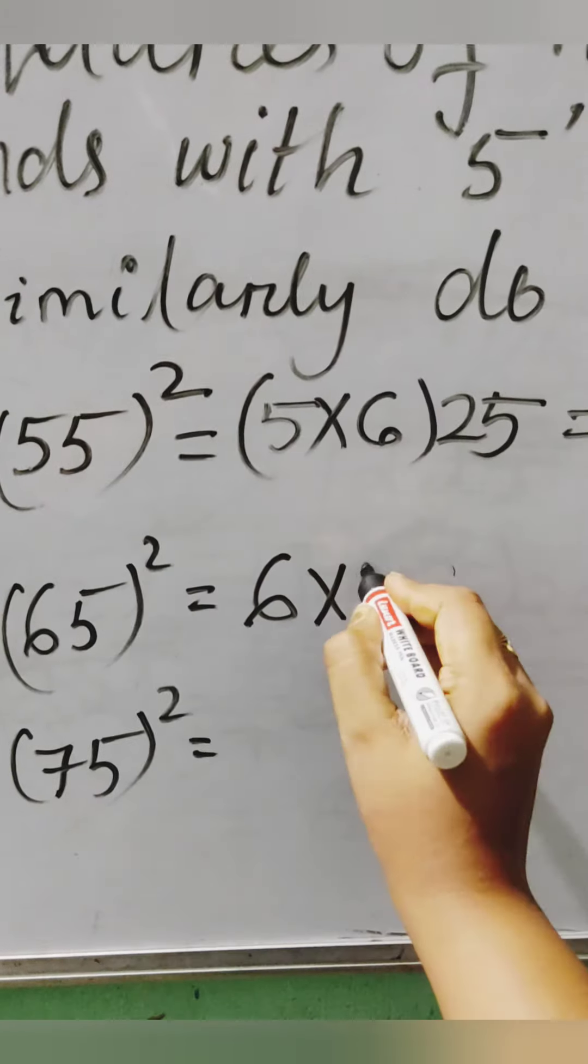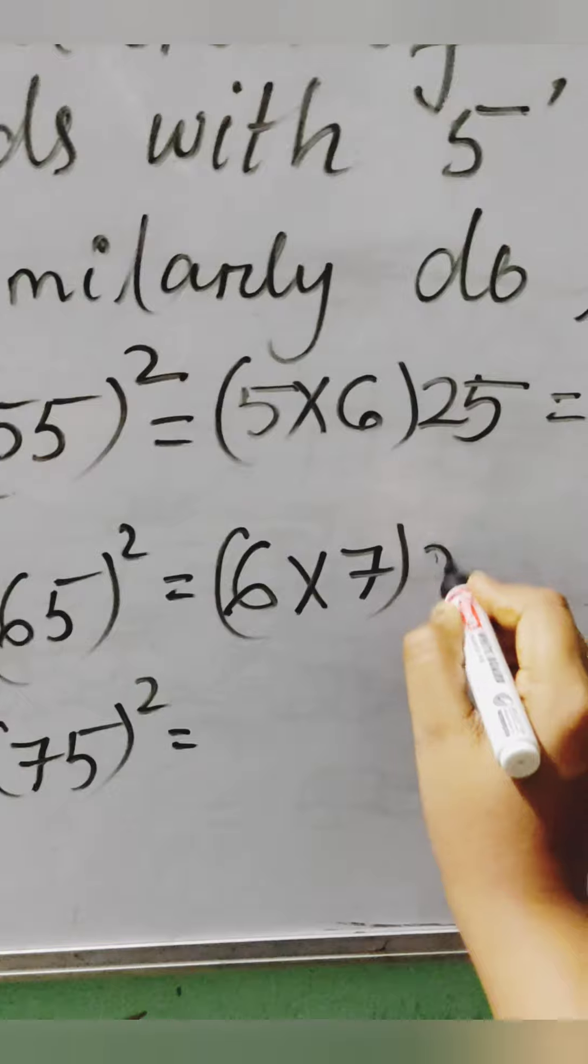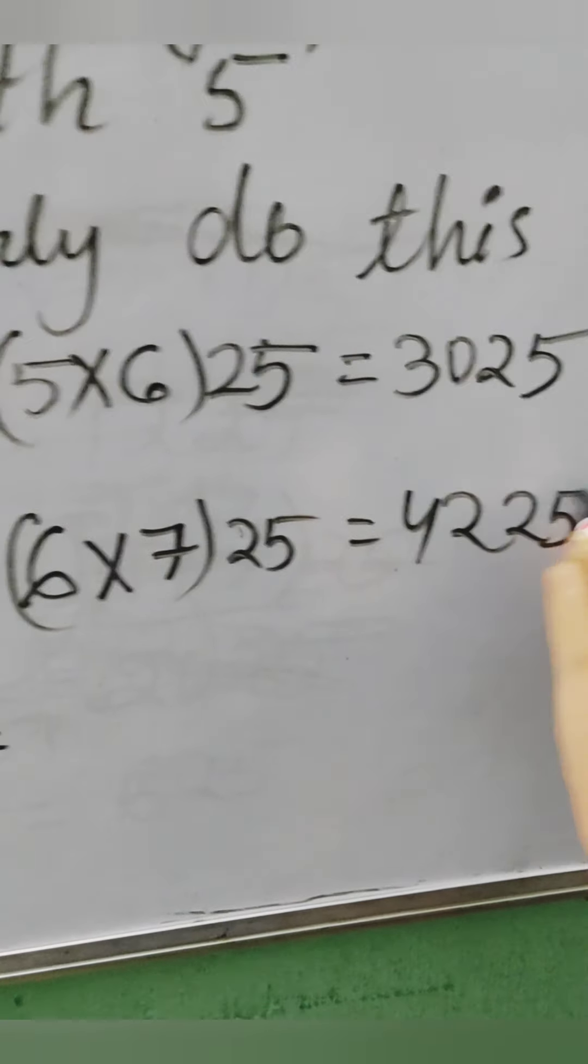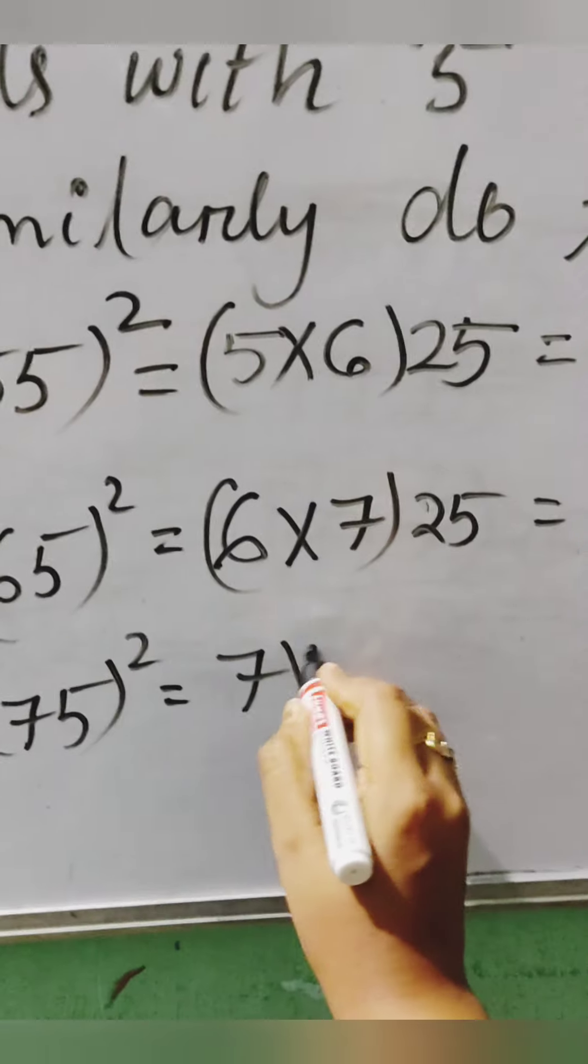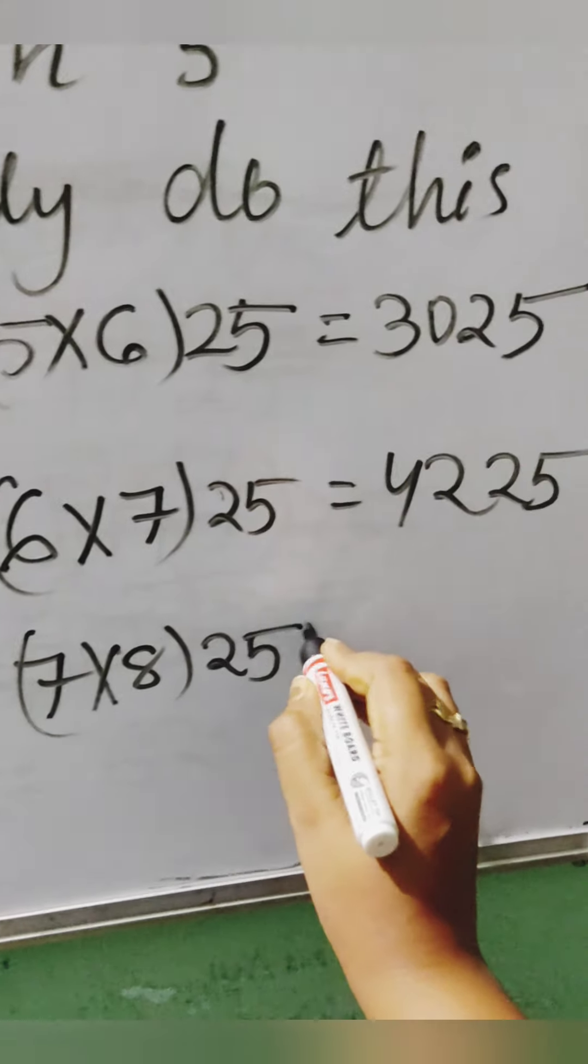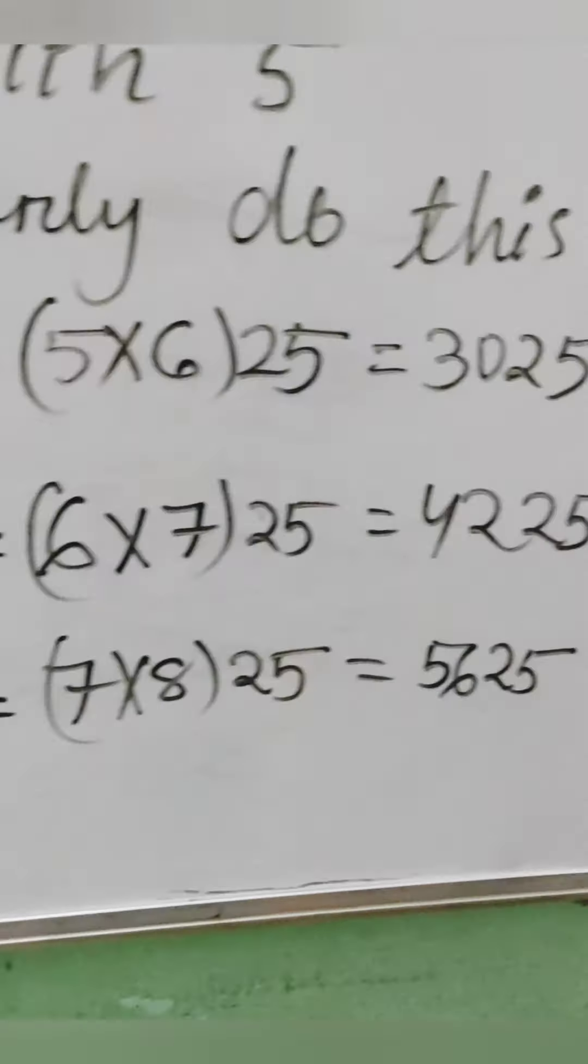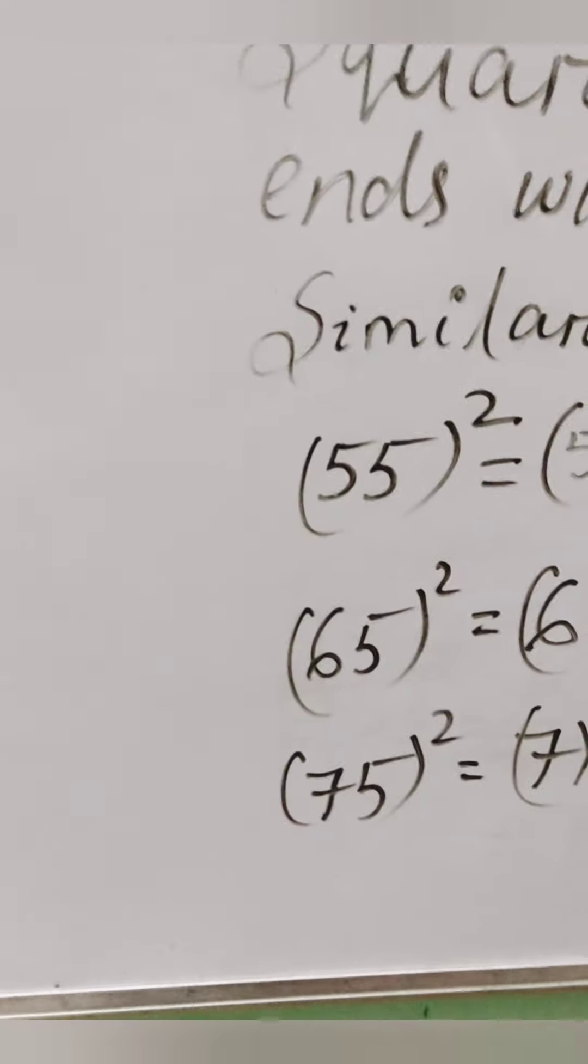Next, 65 squared. So in tens place it is 6. After 6, 7 will come, and 25 nearby it. So the answer is 4225. Similarly, 7 into 8, and 5 squared is equal to 25. So it is 5625. How is it?